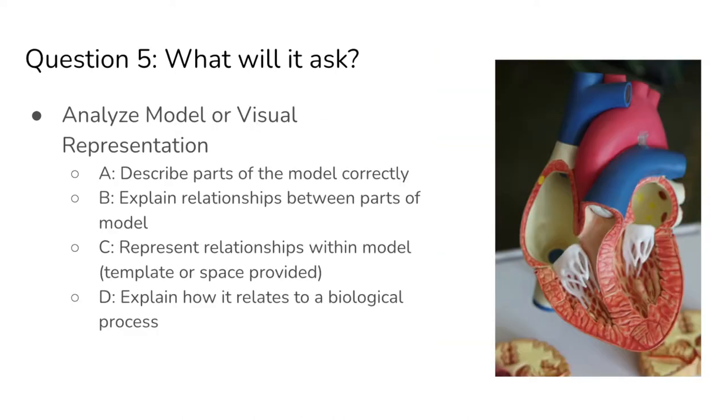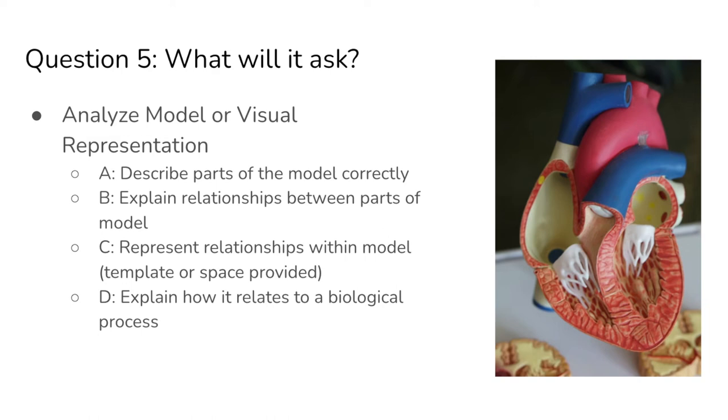In question five, you're going to be given a model or a visual representation, some type of chart or diagram. You won't need to know any circulatory system details or human anatomy on the AP exam, but I put this heart picture in here just for fun. In part A, you're going to be asked to describe parts of the model correctly. This could be a visual or a picture of something, usually a drawing or some sort of chart you might have come across. In part B, you're going to have to explain relationships between parts of the model. In part C, there might be a template or space on the model provided for you to draw or to add something to that model. So this is the only drawing that you might have to do on the AP exam besides generating a graph, which would be part of questions one or two on the free responses. In part D, you're going to have to explain how this model relates to a biological process or a phenomenon. But remember, this is all relating back to some sort of picture or image that you are seeing in this question.